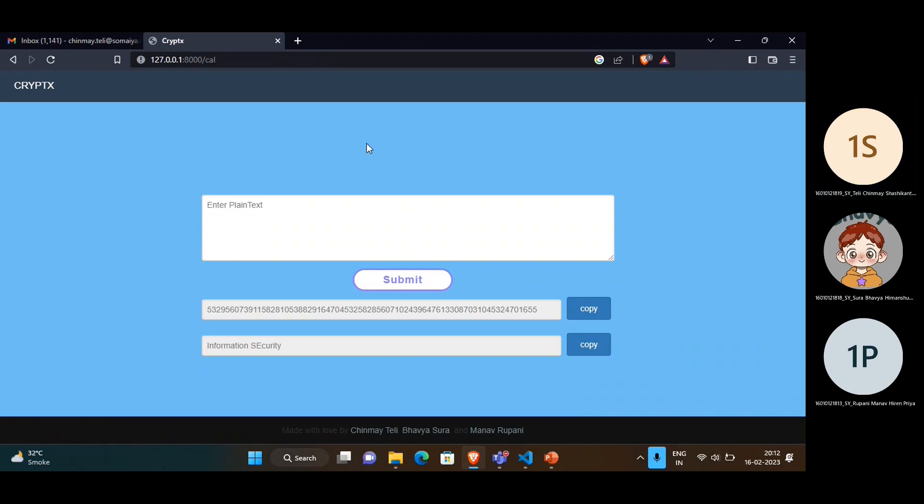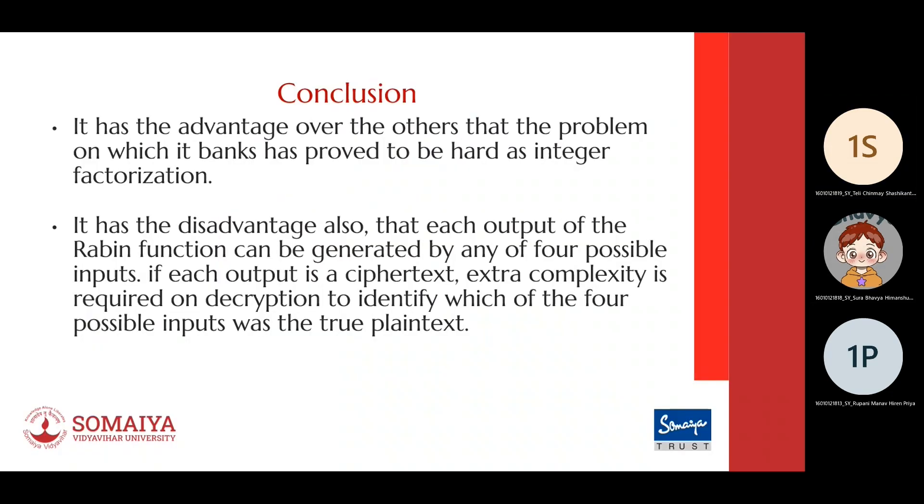Before concluding, I'd like to discuss a few key points which includes the speed of the system and the advantages and disadvantages that Rabin cryptosystem brings. When talking about speed, the speed of Rabin cryptosystem depends on the size of the prime factors used for key generation. It uses RSA algorithm in the logical backend to generate public and private keys for Rabin.